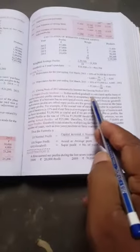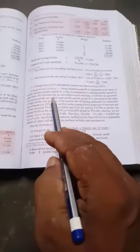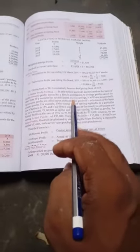Next method, Super Profit Method. In this method, goodwill is calculated on the basis of surplus profit earned by the firm in comparison to average profit earned by other firms. If the business has no excess in earnings, it will have no goodwill. Such excess profit are called super profit and goodwill is calculated on the basis of super profit.